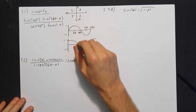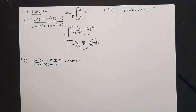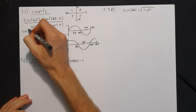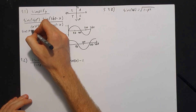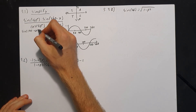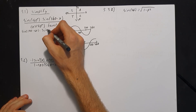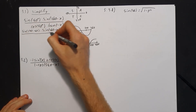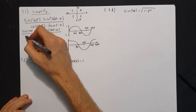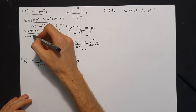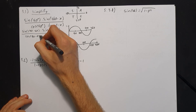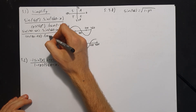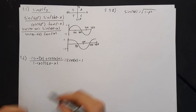I've given you the CAST diagram and two graphs. Let's start: sine of 140 is rewritten as sine of (180 minus 40). Then we have sine of (360 minus x). And cos of 50 is rewritten as cos of (90 minus 50), multiplied by tan of negative x.